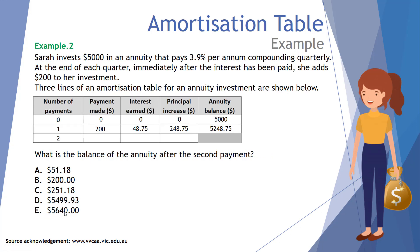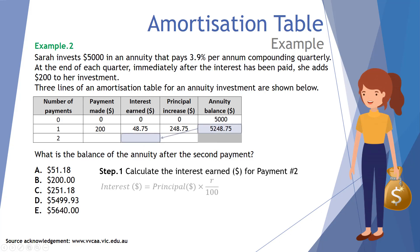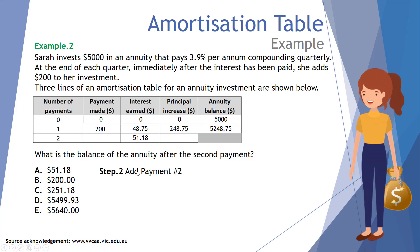Our second example: Sarah invests $5,000 in an annuity paying 3.9% per annum compounding quarterly. At the end of each quarter, immediately after interest is paid, she adds $200 to her investment. Three lines of an amortization table are shown. We want to find the balance after the second payment. Step one: calculate interest for payment two. We multiply the principal of $5,248.75 by 3.9% divided by 4 (quarterly compounding), giving interest of $51.18.